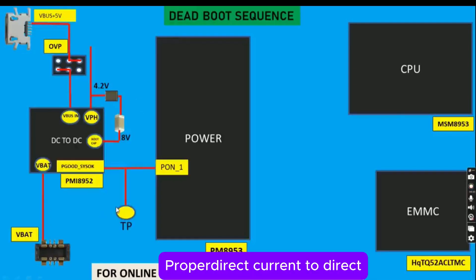Proper DC to DC conversion is essential for the operational efficacy of mobile devices, with specific voltage outputs serving as indicators of successful functionality. Monitoring the 1.8 volts is critical for achieving optimal performance during troubleshooting efforts.